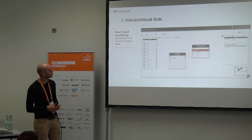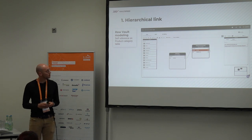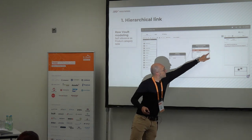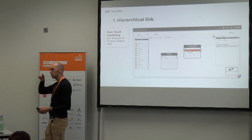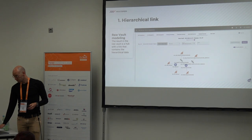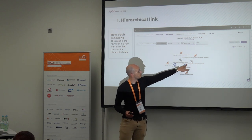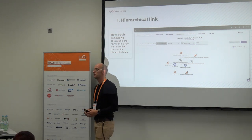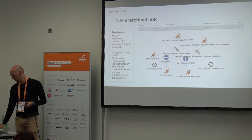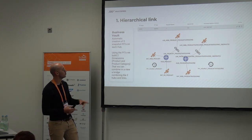For the hierarchical link, in the source editor you identify it as a self-reference — just dragging and dropping it onto the correct attributes, and then that link is created for you. On the product category, you get a self-reference link and a link satellite that contains the data on the hierarchical relationship. That's how it is loaded into the raw vault.